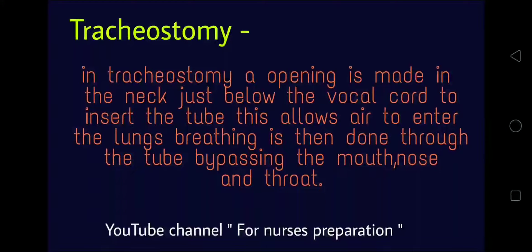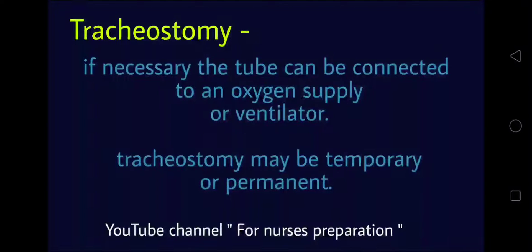In tracheostomy, an opening is made in the neck just below the vocal cord to insert a tube. This allows air to enter the lungs. Breathing is then done through the tube, bypassing the mouth, nose, and throat. If necessary, the tube can be connected to an oxygen supply or ventilator.